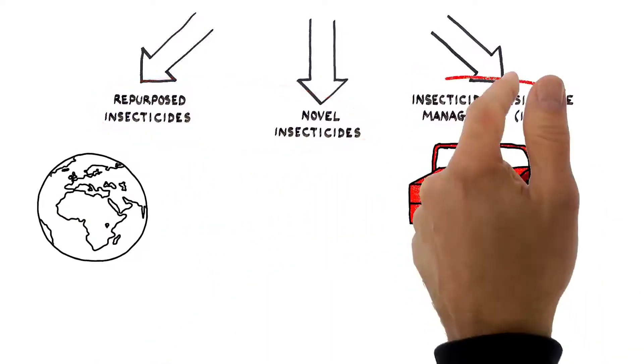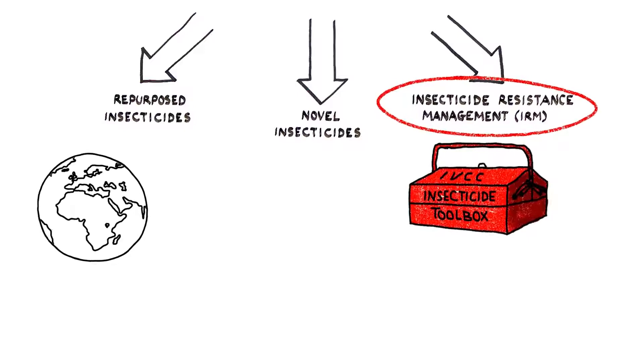This is why the new implementation strategy is so important, as it will determine how and when the toolbox of insecticides are best used in a sustainable way, making malaria elimination a real possibility.